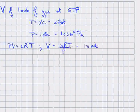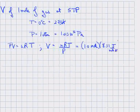Well, n is equal to 1 mole. The universal gas constant is 8.31 joules per mole kelvin. Temperature, 273 kelvin.